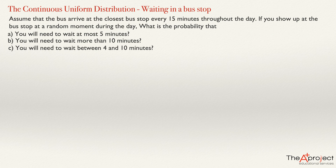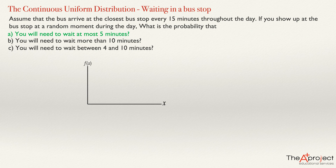So let's find these three probabilities. For the first one, what is the probability that you need to wait at most five minutes? At most five minutes means five minutes or less. It will be a good idea to make a graph of the probability density function, with x on the horizontal axis and the probability density on the vertical axis.